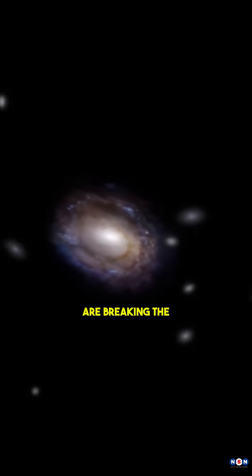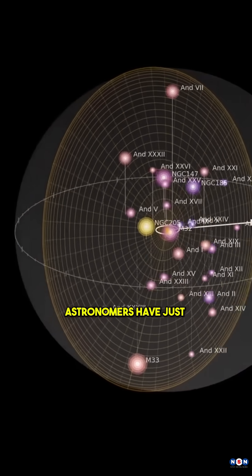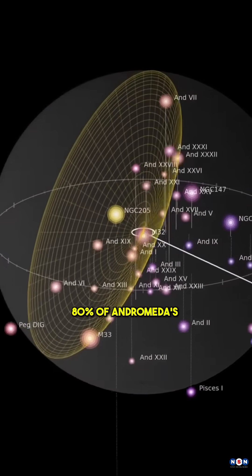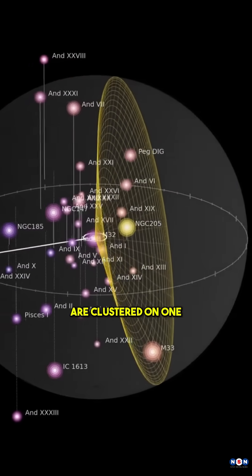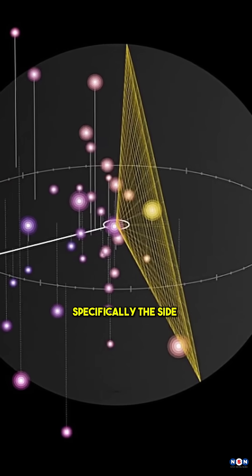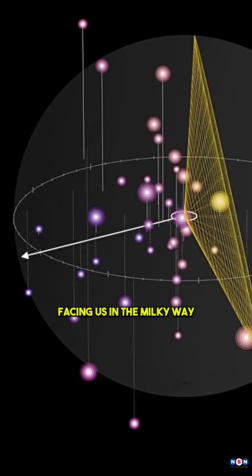Andromeda's satellite galaxies are breaking the rules of cosmology. Astronomers have just discovered that over 80% of Andromeda's 37 known satellite galaxies are clustered on one side of the galaxy, specifically the side facing us in the Milky Way.